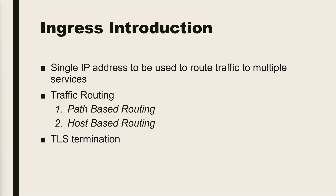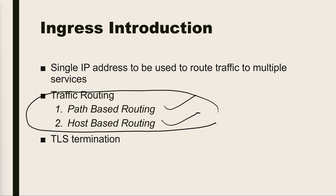Another benefit is traffic routing. We can do path-based routing and host-based routing. In path-based routing, if we have a domain test.com and want to go to application 1, we use test.com/application1, and test.com/application2 routes to application 2. For host-based routing, app1.test.com and app2.test.com route based on the hostname. Both types of routing are supported by ingress controller.